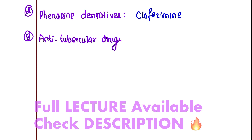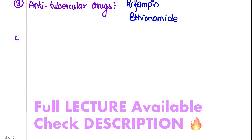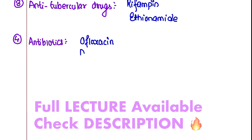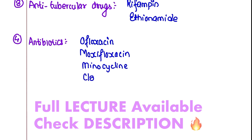Third are anti-tubercular drugs - the same drugs used in tuberculosis - for example Rifampin, which is extensively used, and Ethionamide. Fourth are other antibiotics, including fluoroquinolones such as Ofloxacin and Moxifloxacin, as well as Minocycline and Clarithromycin, which is a macrolide.